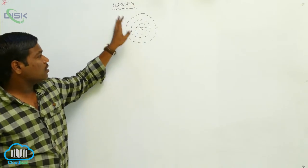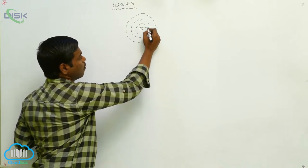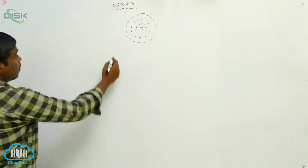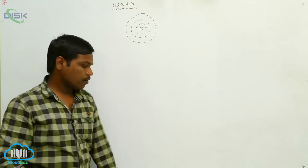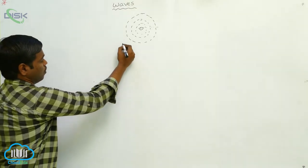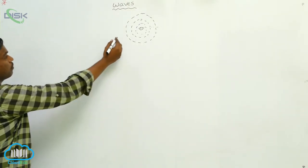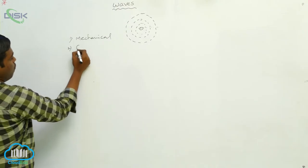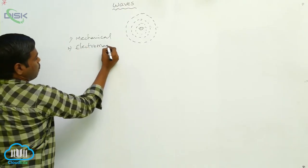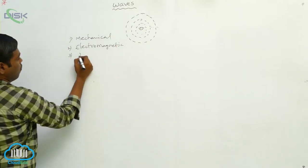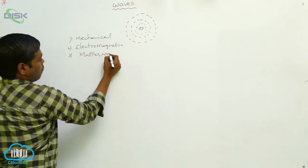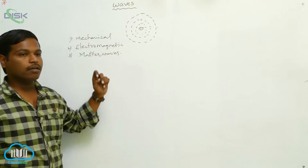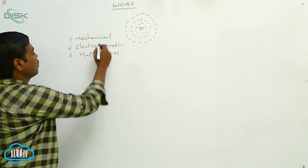In a wave, only the disturbance is traveling from one point to another point. There are three different types of waves: mechanical waves, electromagnetic waves, and matter waves.